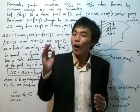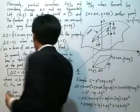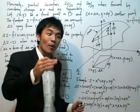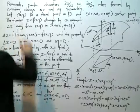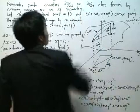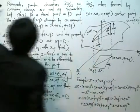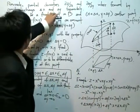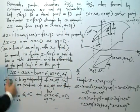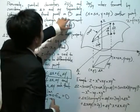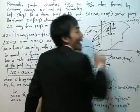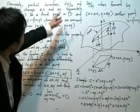These are new ideas as we go into advanced differential calculus. Previously, the partial derivatives ∂z/∂x or ∂z/∂y were formed by considering changes in x and y — delta x and delta y — separately. Now what we'll do is let (x, y) be a fixed point in D, and let (x + Δx, y + Δy) be another point, a second point in the same domain D, which is the x-y plane.